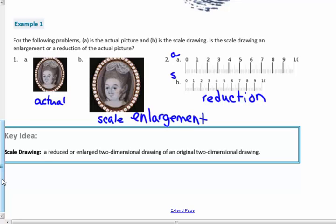So a key idea, scale drawing is a reduced or enlarged two-dimensional drawing of an original two-dimensional drawing. So not 3D, 2D.